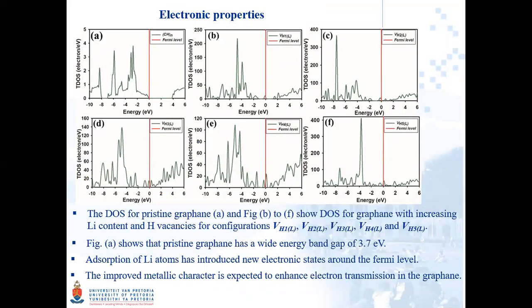On this slide, we present the electronic properties where Fig-A represents the density of states for pristine graphane. Fig-B to Fig-F shows the density of states for graphane with increasing lithium content and hydrogen vacancies for configurations VH1, VH2, VH3, VH4, and VH5 along the line pathway. Fig-A shows that pristine graphane has a wide energy band gap of 3.7 eV. Adsorption of lithium atoms has introduced new electronic states around the Fermi level as seen in Fig-B to Fig-F. The improved metallic character is expected to enhance electron transmission in graphane.